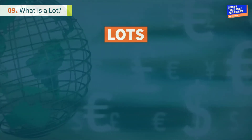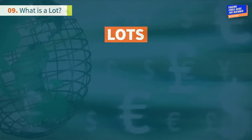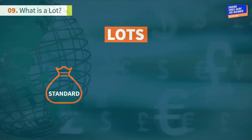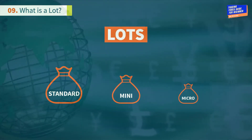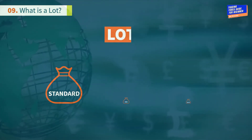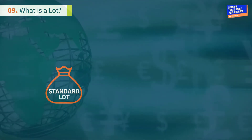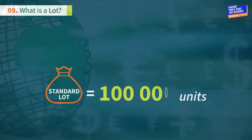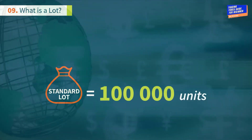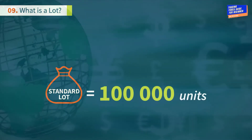The three most common types of lots are the standard, the mini, and the micro lot. One standard lot is equal to 100,000 units of the base currency.